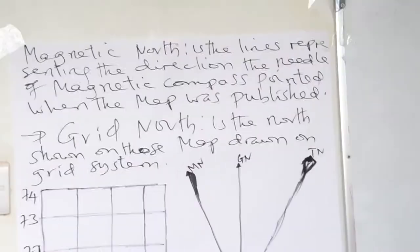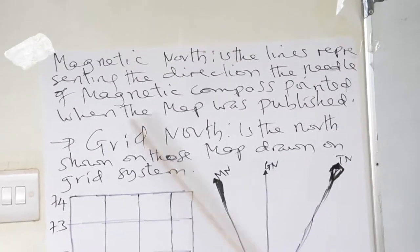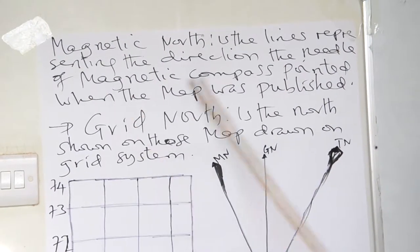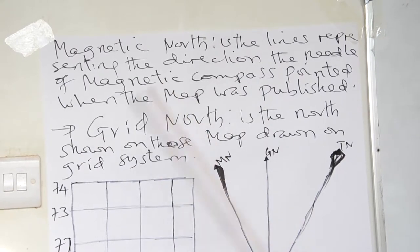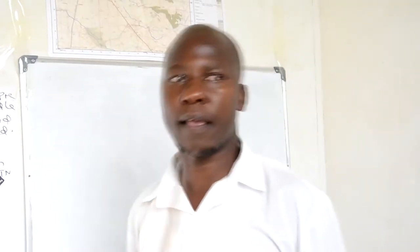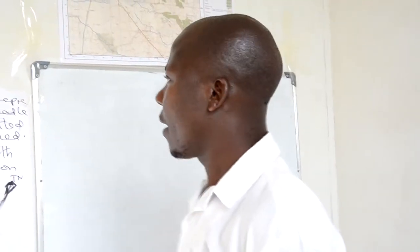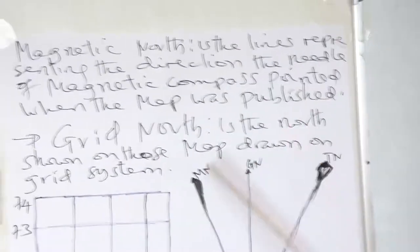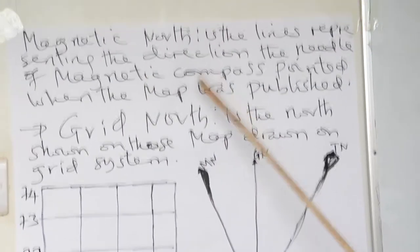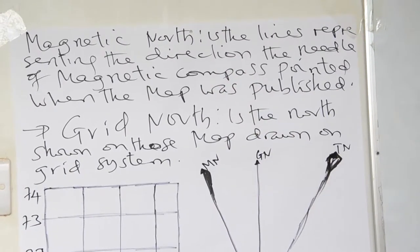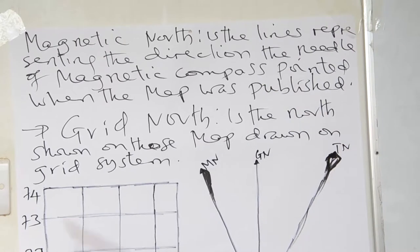Magnetic North is the line representing the direction of the needle of the Magnetic Compass. We are not talking about a Magnetic Compass that is simply calculating an angle of a certain area. When you publish a certain map, the compass direction or compass bearing should be there because it is the one used in surveying.